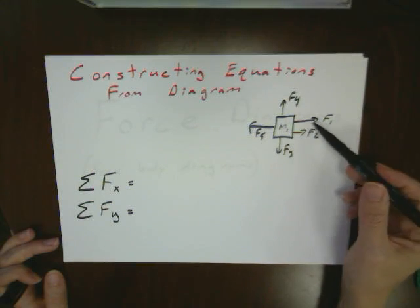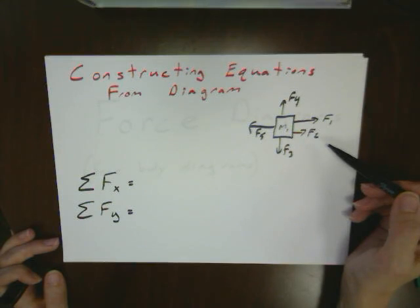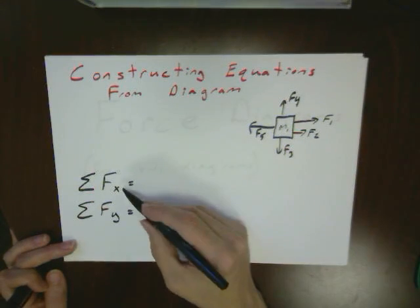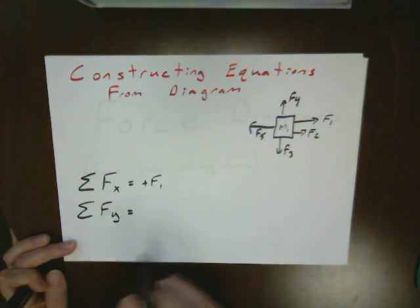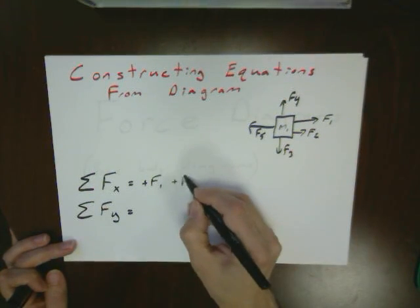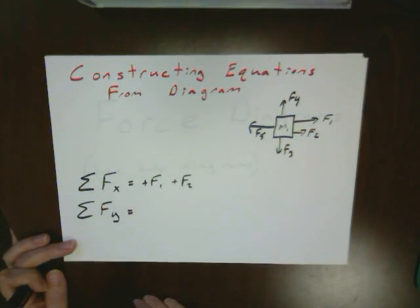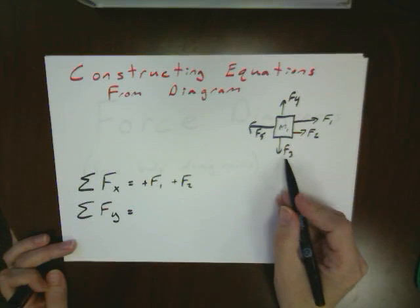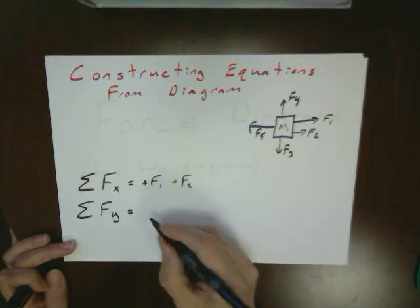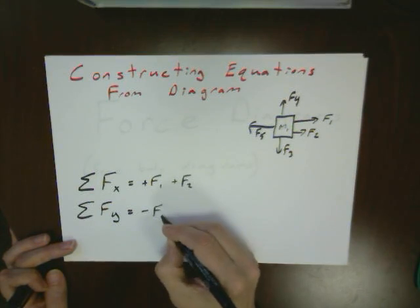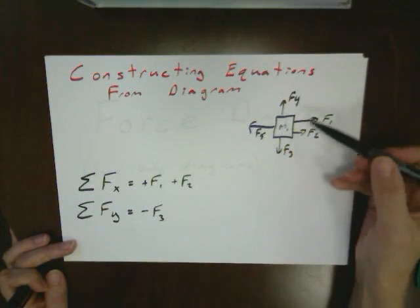Now f1 is over here to the right, so that means that's going to be in the positive x direction. Similarly, f2 is in the positive x direction. f3, however, that's down, so our up and down direction gives us our y equation, and down is negative. So we would plug in a negative f3.